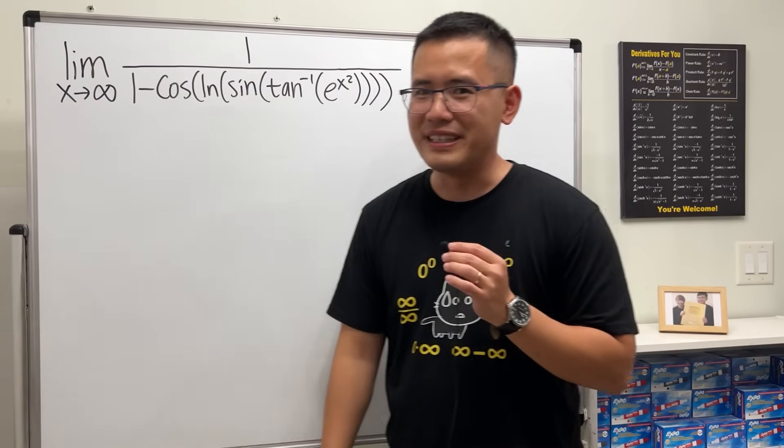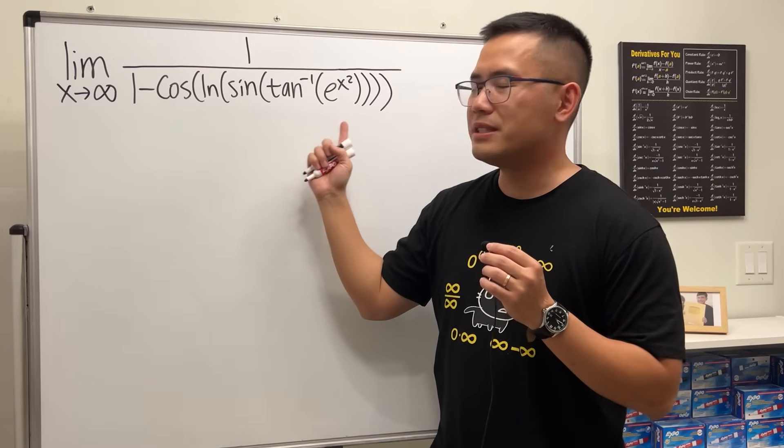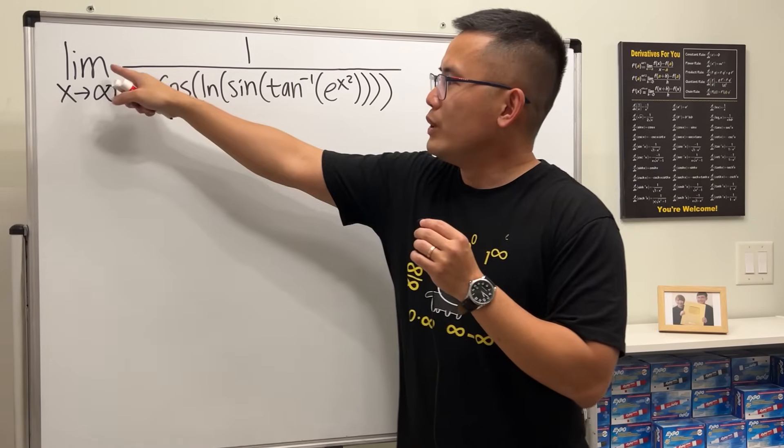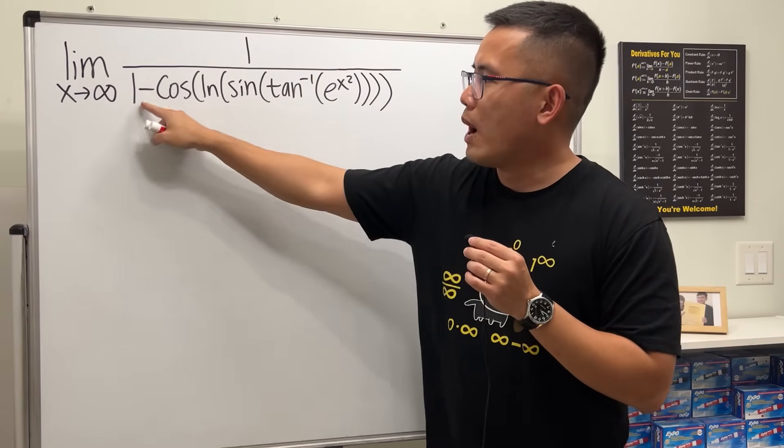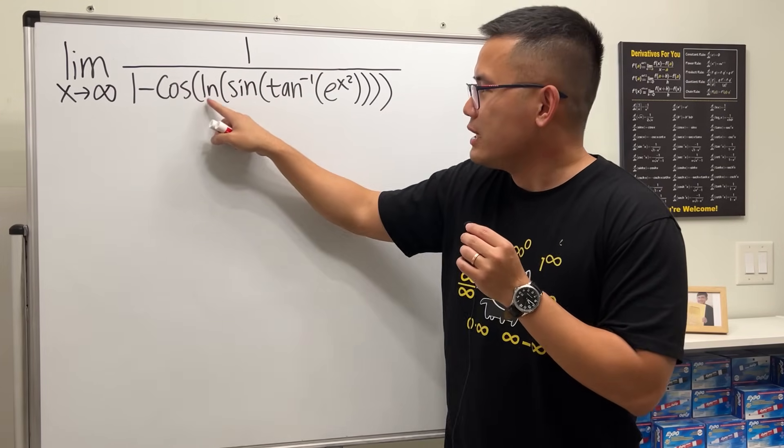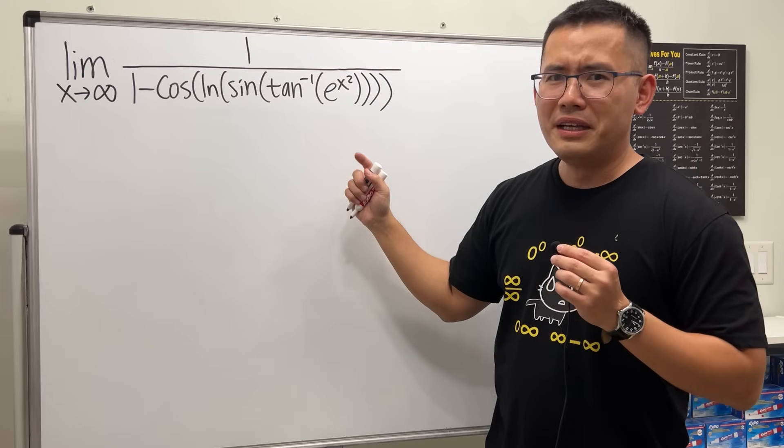Okay, let's do some math for fun. Here I have this limit for you guys—in fact, I just created this limit today. Let's have a look: we have the limit as x approaching infinity of 1 over 1 minus cosine of ln of sine of inverse tangent of e to the x squared power.